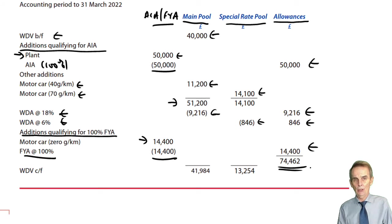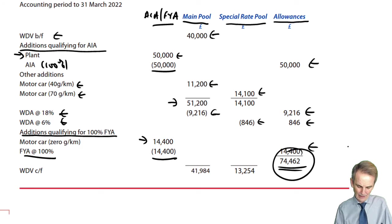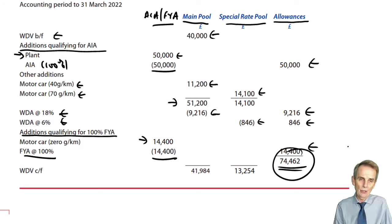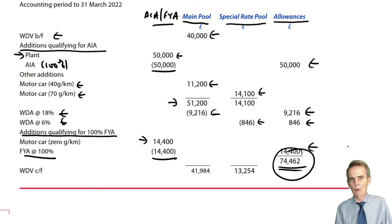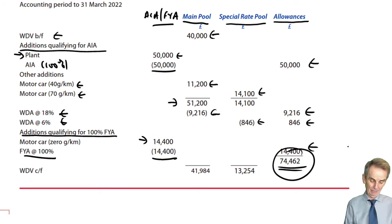Add up the capital allowances available and the job is done. In the Section C question, you would likely have to take that figure of £74,462 and deduct it from the adjusted trading profit you've already computed, to get the tax adjusted trading profit figure.